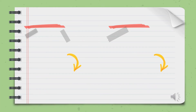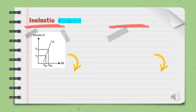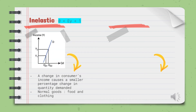In income elasticity, there are four degrees of responsiveness. The first is inelastic income, where the type of goods are normal goods like food and clothing. An increase in income leads to an increase in quantity demanded, but the increase in demand is less than the increase in income. The value of inelastic income elasticity is between 0 and 1.